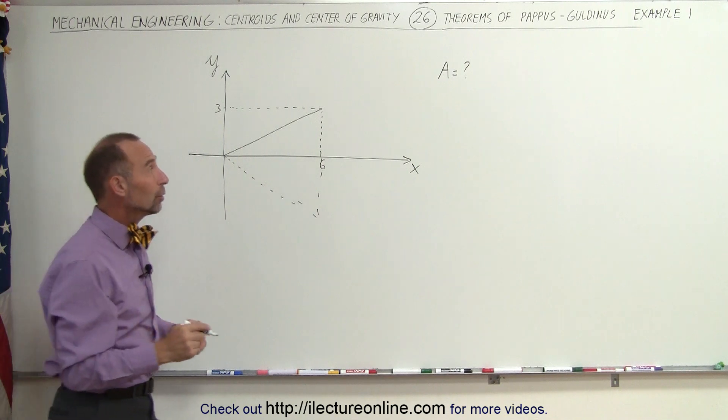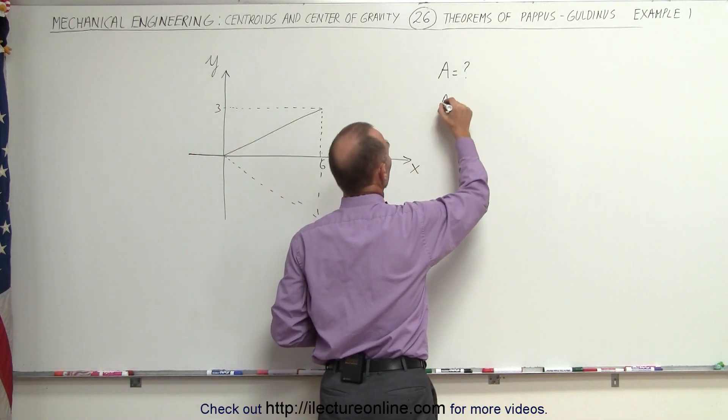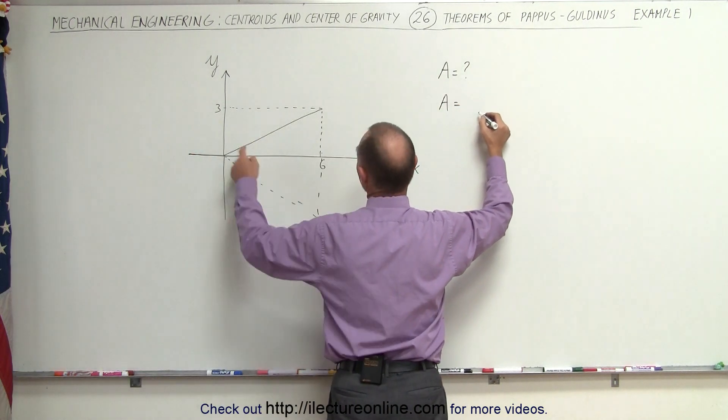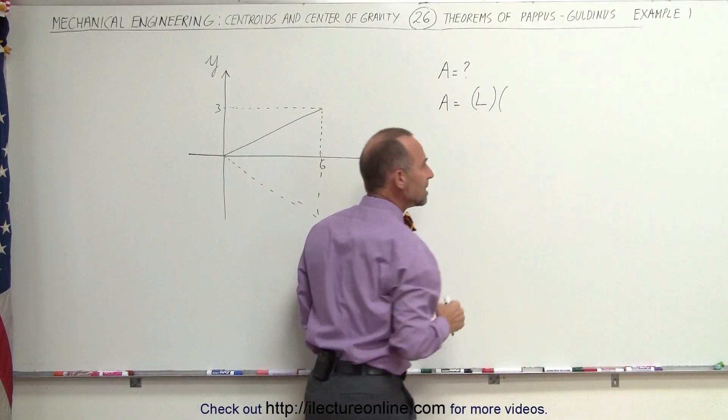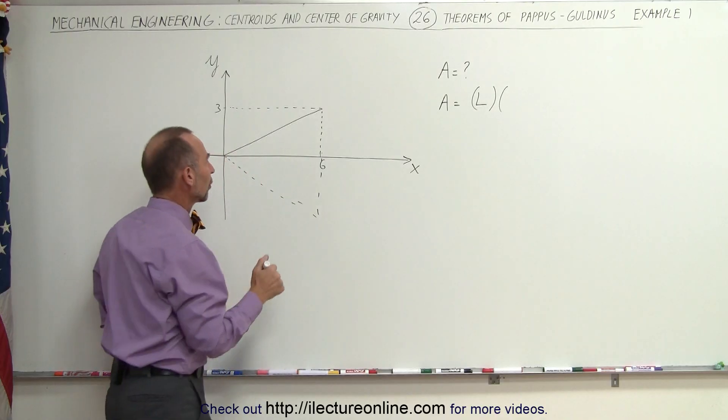In order to find it, we know that the area is equal to the length of the curve, in this case a straight line, times the distance covered by the centroid.